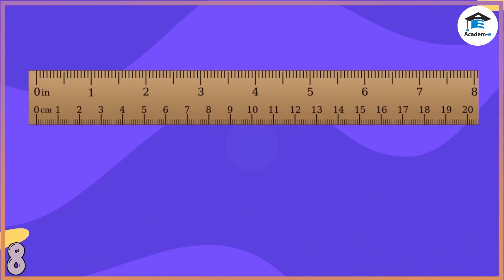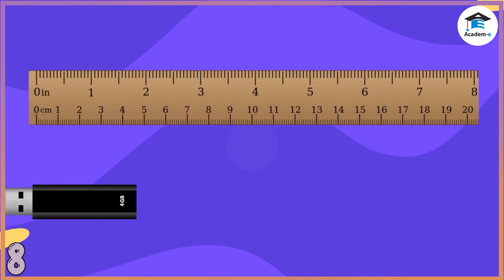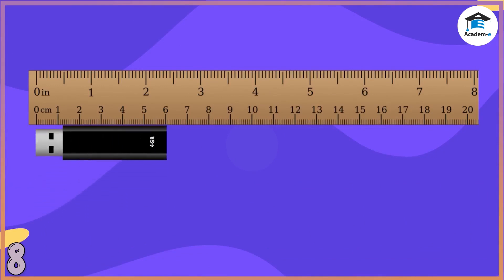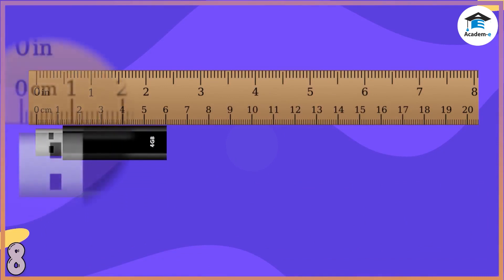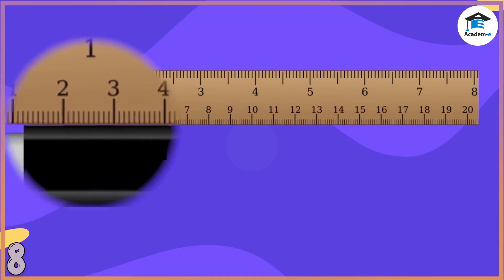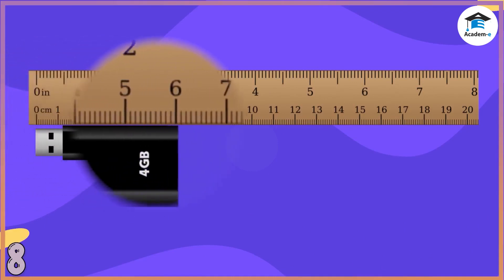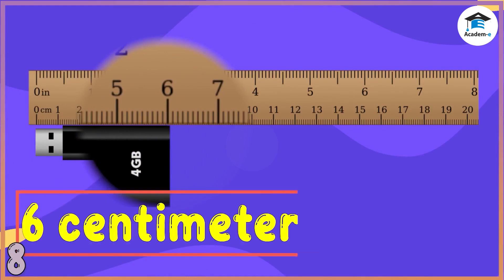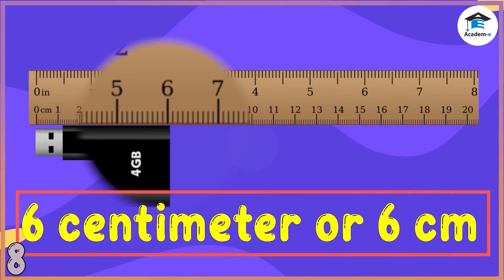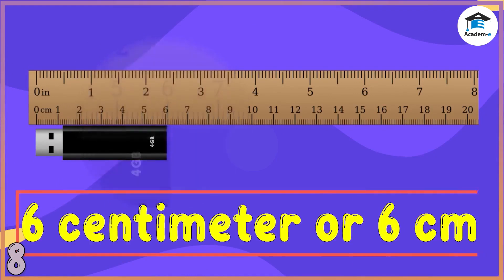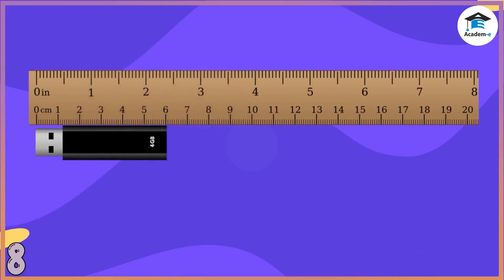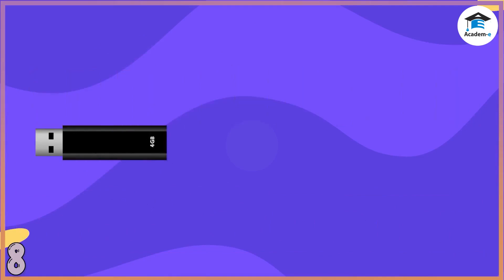Third example: Let us measure this flash drive. Put the flash drive beside the ruler and place the tip of the flash drive at the zero mark of the ruler. Then look at the other end or tip of the flash drive — it ends at 6 cm. Therefore, the length of the flash drive is 6 cm.